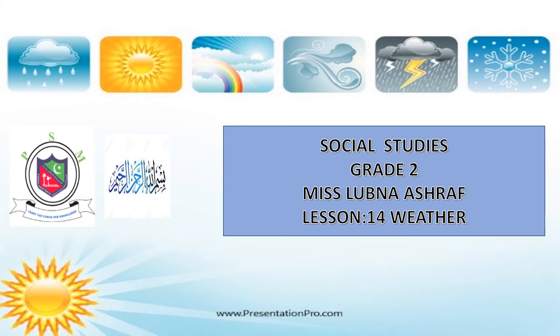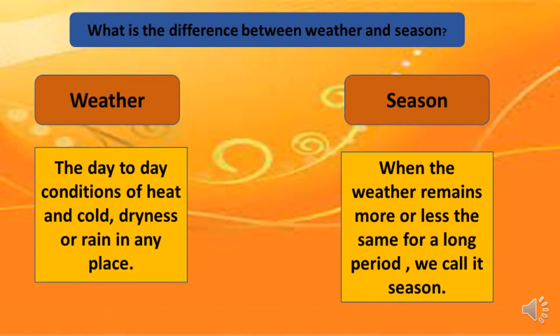Do you know the difference between weather and season? Weather is the day-to-day condition of heat and cold, dryness or rain in any place. A season means when the weather remains more or less the same for a long period of time — we call it a season.